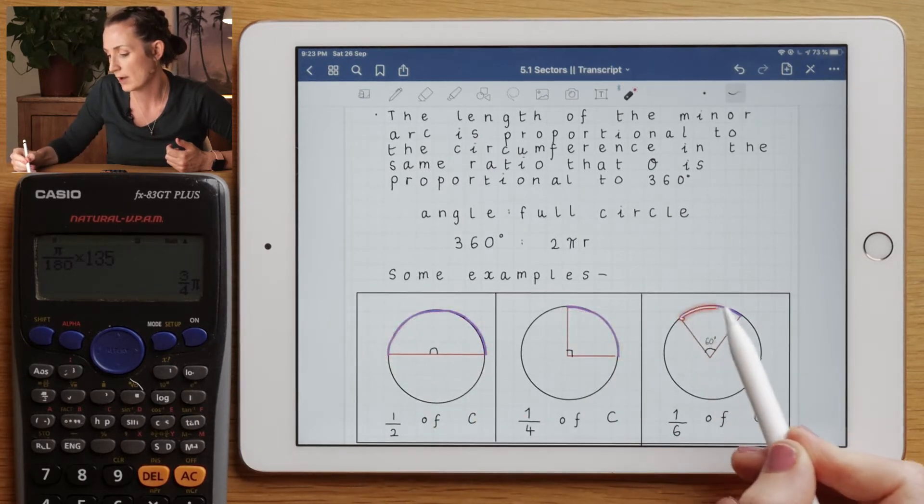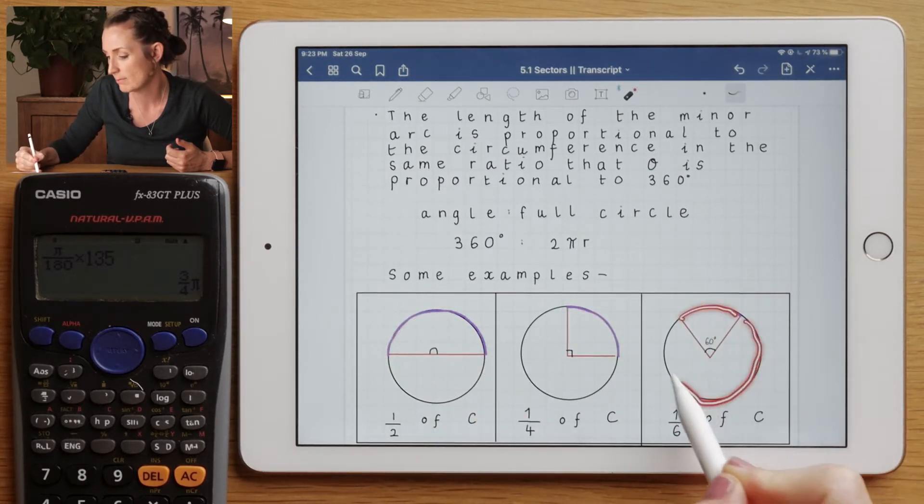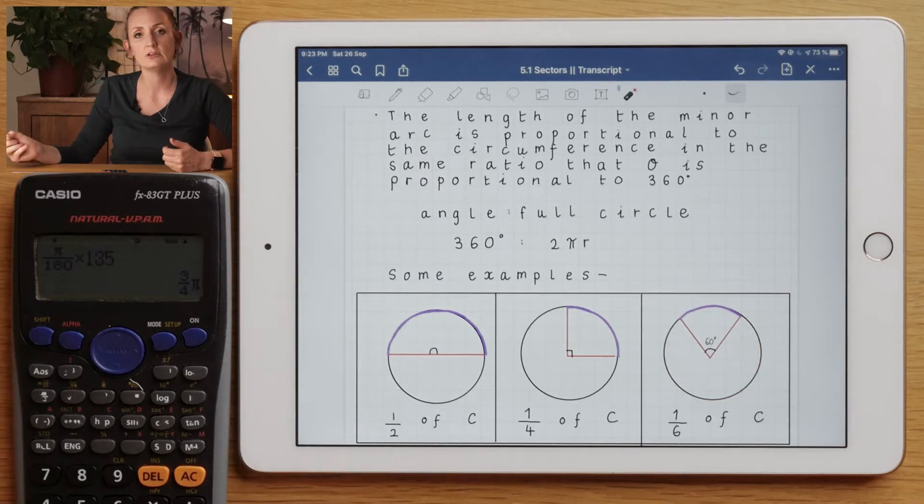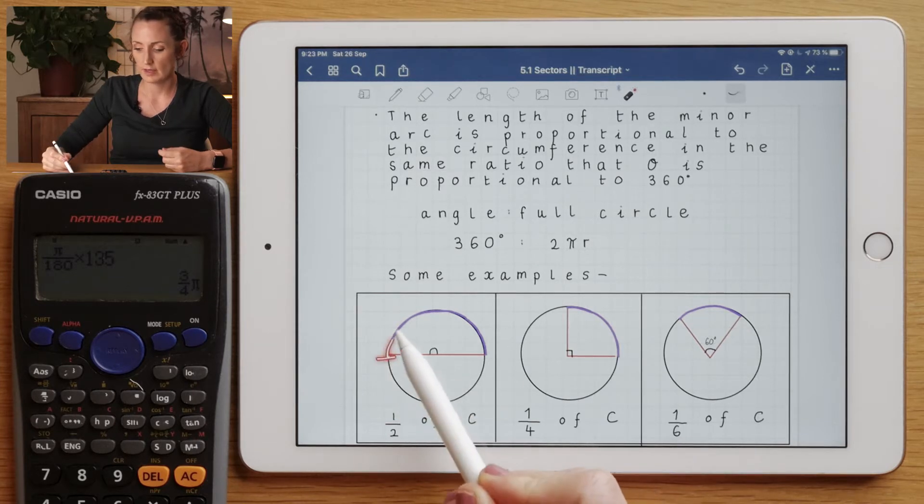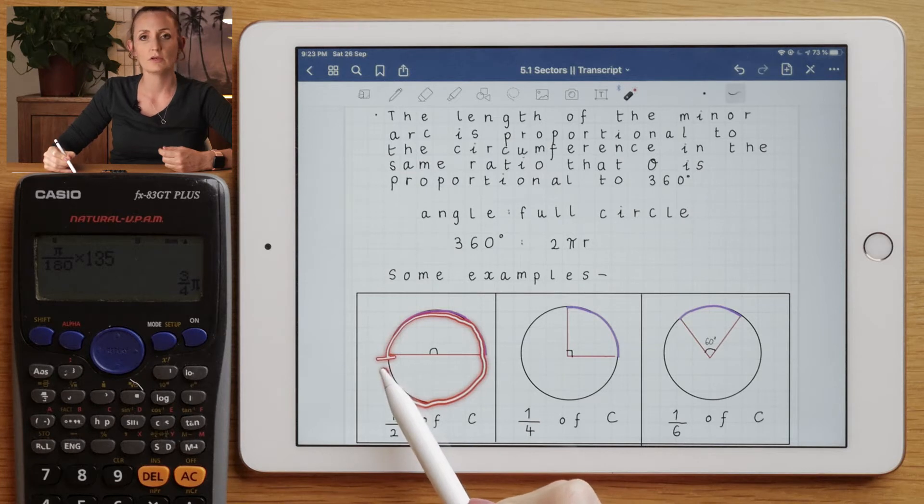You also have a minor arc length and a major arc length, and we need to know how to calculate that length. We need to think about what the formula would be. We already discussed that if you were to walk the whole way around the outside of the circle, you would have covered a distance of 2πr.